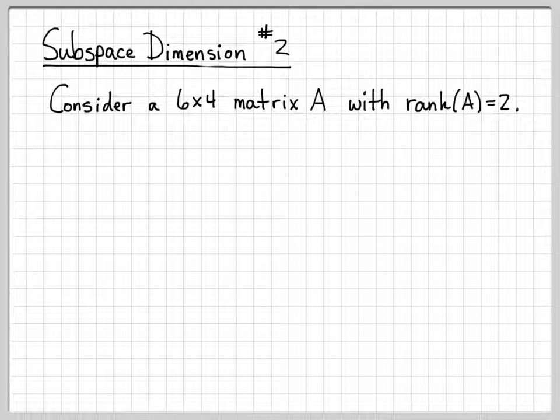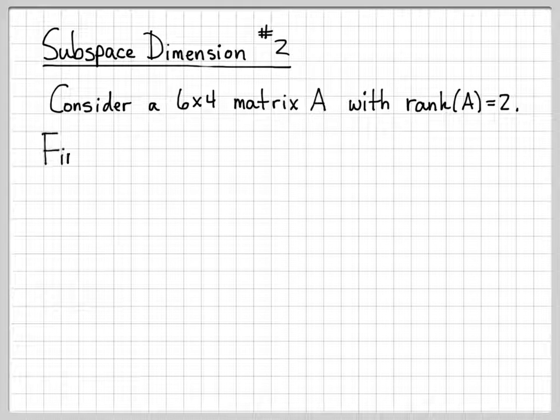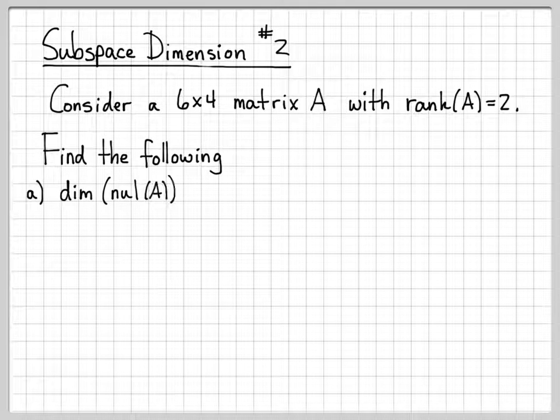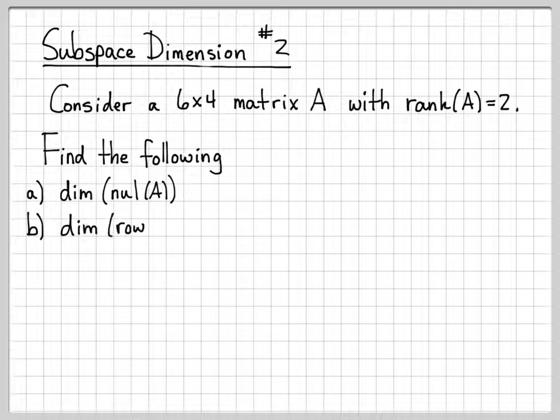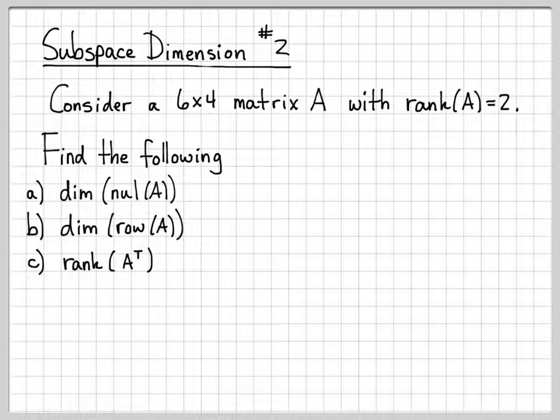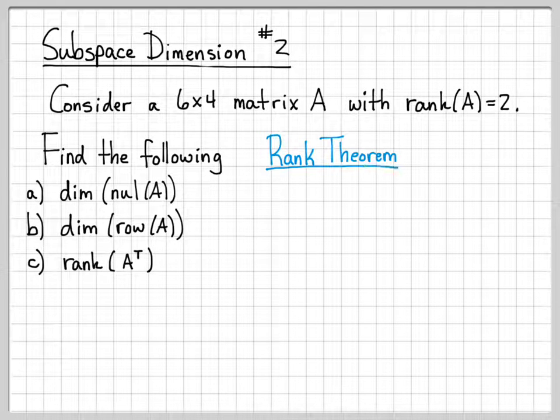So in this problem, we're going to be working with a 6 by 4 matrix A, and we are told that the rank of the matrix A is equal to 2. And we'll talk about the rank here in just a minute what that means. So given this 6 by 4 matrix and the fact that we know its rank is 2, we're going to find the dimension of the null space, the dimension of the row space, and the rank of the transpose of the matrix.